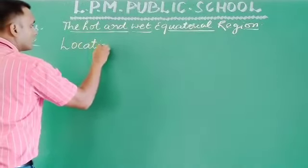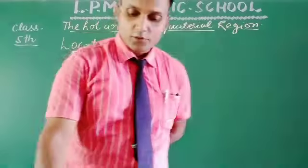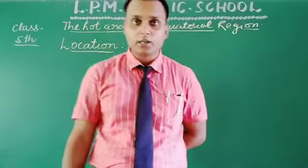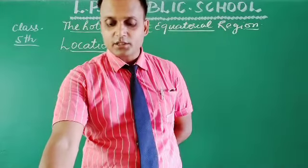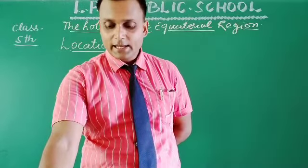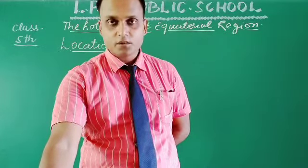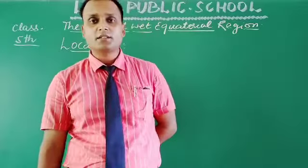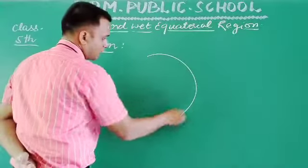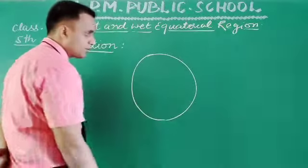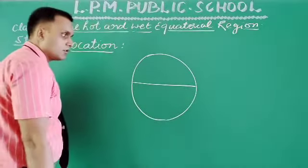In this chapter, we are particularly going to read about the hot and wet equatorial region. The first topic is location. The hot and wet equatorial climate region lies within the torrid zone and extends 10 degrees north and south of the equator.